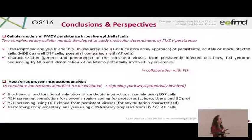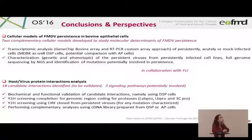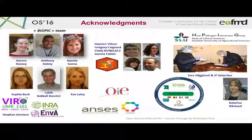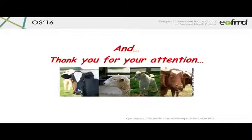We will also complete the yeast two-hybrid screening for genomic regions coding for proteases — which sometimes lead to toxicity and are not easy to use — by cloning different domains of interest, and complete this yeast two-hybrid method using clones from persistent viruses for characterized mutations, with three mutations currently under study. In the future we want to perform complementary analyses using siRNA libraries prepared from DSP or AP cells. I thank my colleagues in the lab, the i5 team for interactomic studies, Jean-François and Sarah from SLU, Katarina the postdoc, and funding from the TranscriptoVac project.